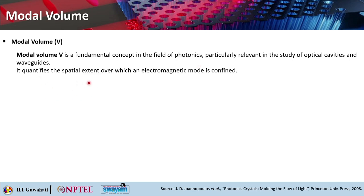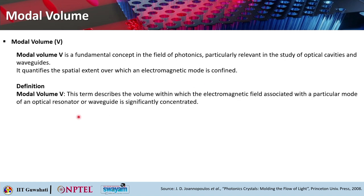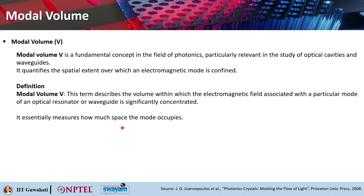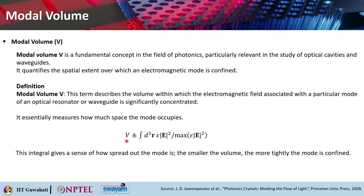The formal definition: modal volume V defines the volume within which the electromagnetic field associated with a particular mode of an optical resonator or waveguide is significantly concentrated. It is essentially measuring how much space a particular mode occupies. It is calculated as V = ∫ε|E|² dV divided by the maximum of ε|E|², giving a sense of how spread out the mode is.